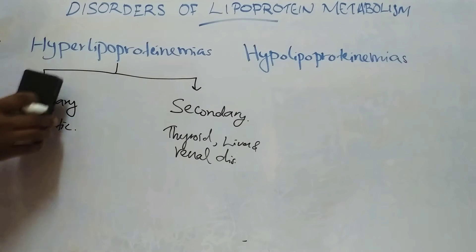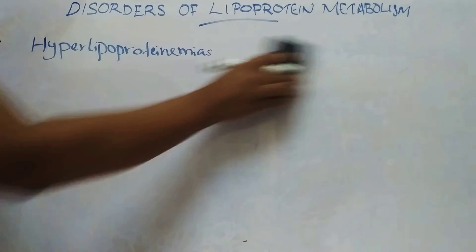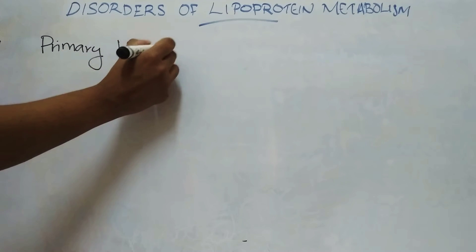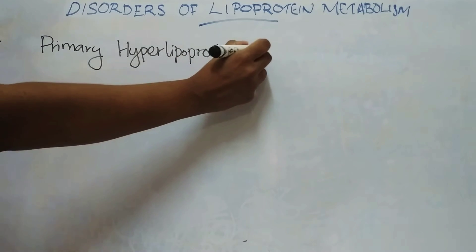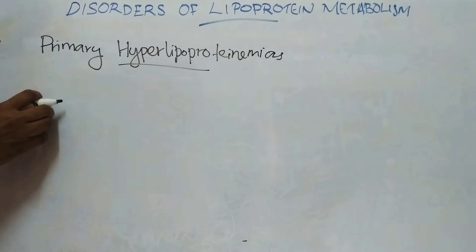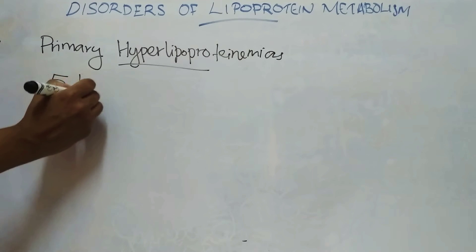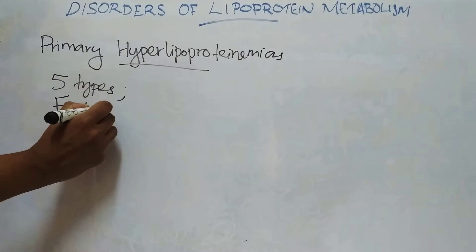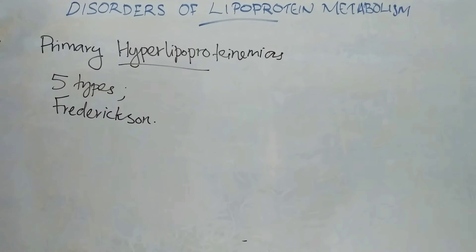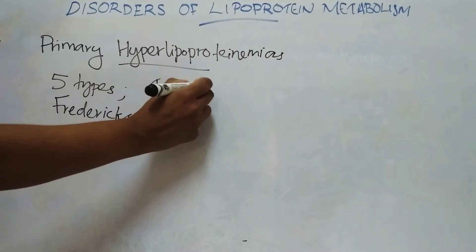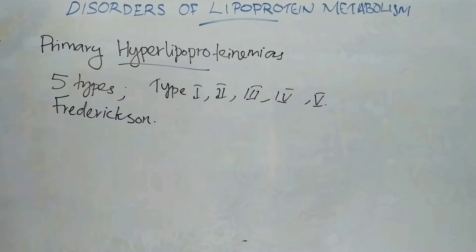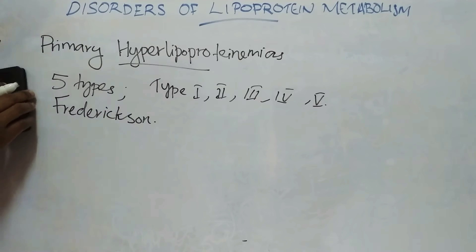First we will see primary hyperlipoproteinemias. There are five types, based on changes in plasma lipoproteins. These five types were proposed by Frederiksen and are type 1, 2, 3, 4, and 5. First we will see type 1 primary hyperlipoproteinemia.